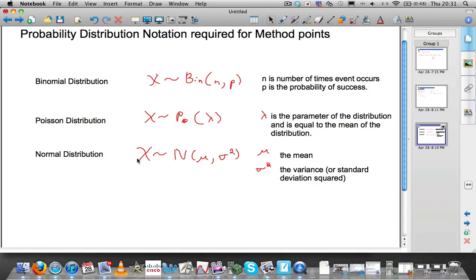Last comes the normal distribution. You state that the random variable X is, squiggly line, normal with a mean, whatever the mean is, and a variance. Or you could put the value of the standard deviation and then just put squared. So if the standard deviation was 5, you could put 25 here or you could put 5 squared. Both will be accepted.